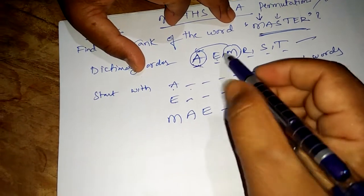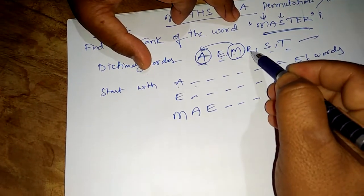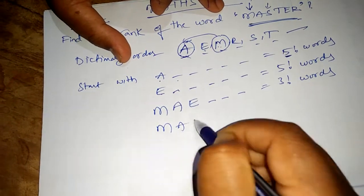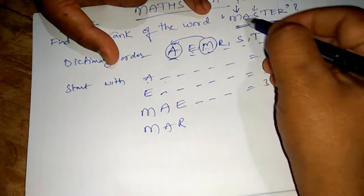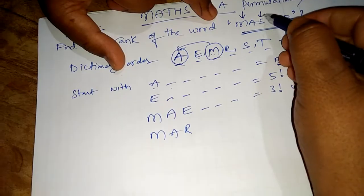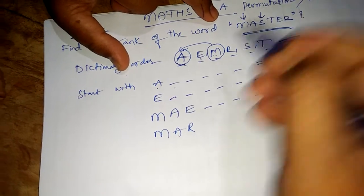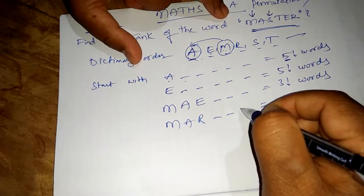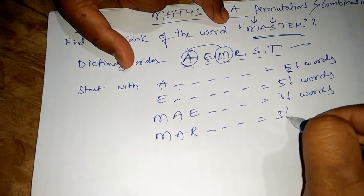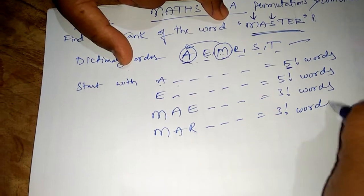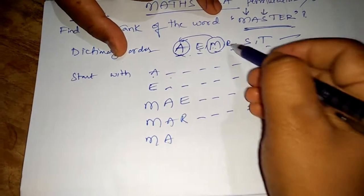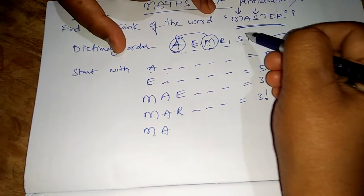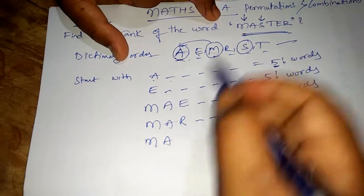After E, the next letter is R. MAS — wait, M and A are already filled. Going to the dictionary order for the third position: R is not matching our required third letter S. We leave three gaps; those three letters can be arranged in 3! ways. So words starting with MAR give 3! words.